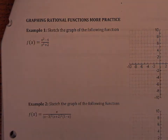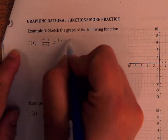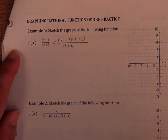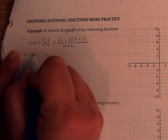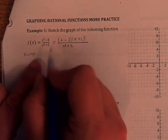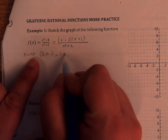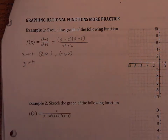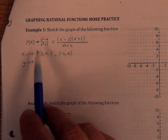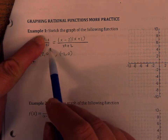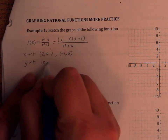Sketch the graph of f of x equals x squared minus 4 over x squared plus 2. Factor the numerator first: x minus 2 times x plus 2. Looking at the zeros of the numerator, we get x equals 2 and x equals negative 2 as the x-intercepts.